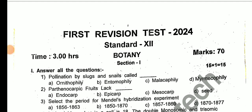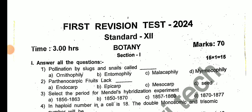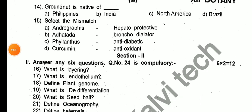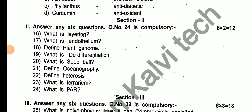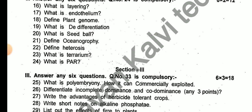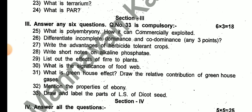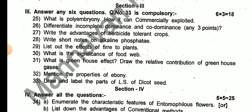Next: Precision Revision test, First Revision Test, 2nd year, 2024 — 12th standard botany, Government official original question paper. For 1-mark questions: What is endothelium? Define plant genome. What is de-differentiation? What is a seed ball? Define oceanography. Define heterosis. What is a terrarium? For 2-mark questions: What is polyembryony — how can it be commercially exploited? Difference between incomplete dominance and co-dominance. Write the advantage of herbicide-tolerant crops. Write a short note on alkaline phosphatase. List out the effects of fire on plants. What is the significance of food web? What is the greenhouse effect? Draw the relative contribution of greenhouse gases. Mention the properties of antibodies. Write the labels of LS of dicot root.